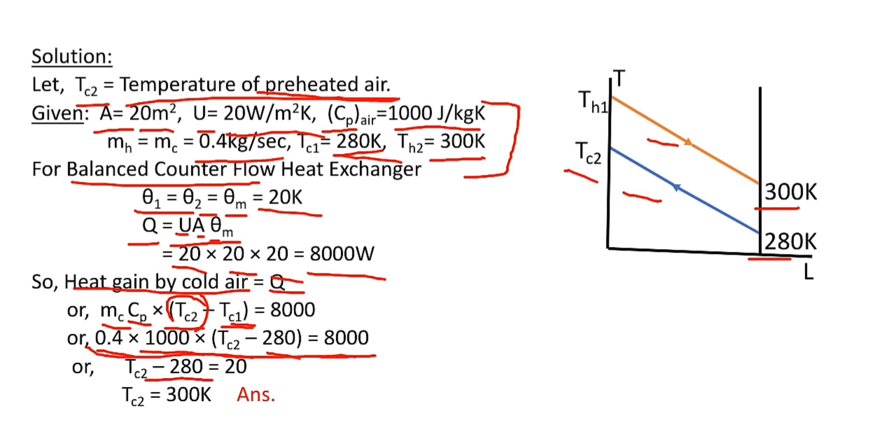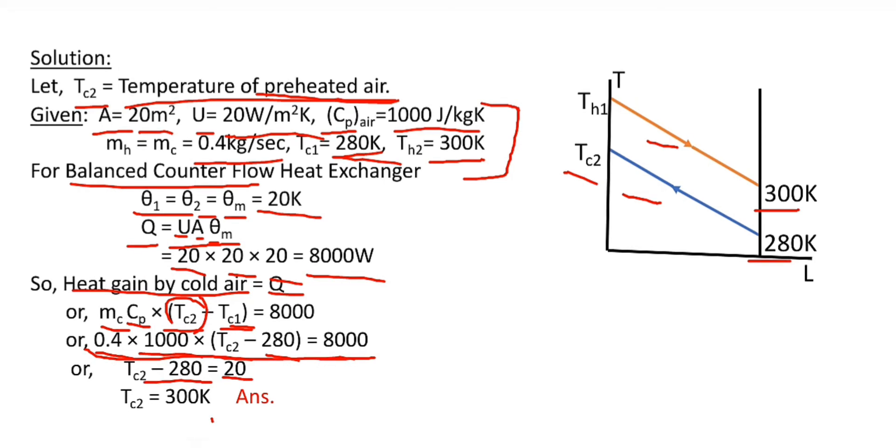we get TC2 - 280 = 20, so TC2 = 300 Kelvin. This is the temperature of preheated air.